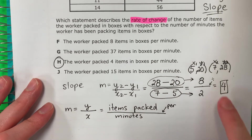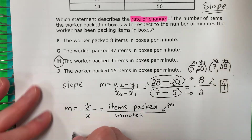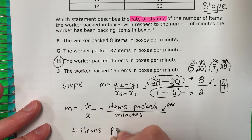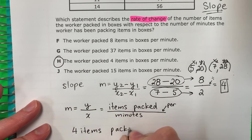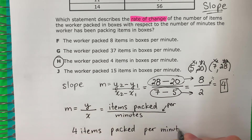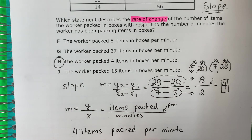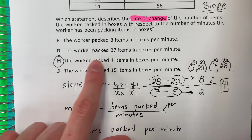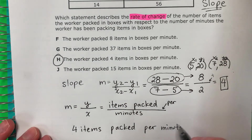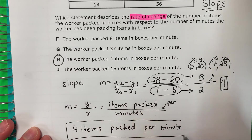Esta línea is per. So 4 items packed per — this is singular — minute. No s. So 4 items packed per minute. Packed 4 items per minute. So this will be your final answer.